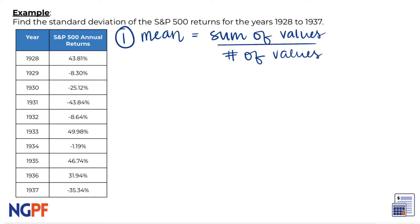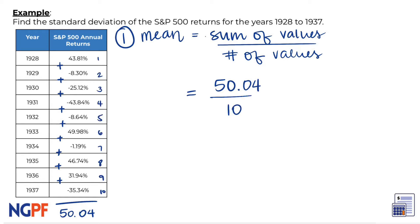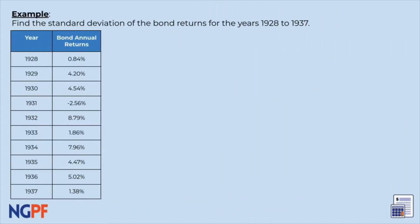We can find the average return of the stock market for these 10 years by adding them up to equal 50.04, and then dividing by 10 for 10 data points, which gives us 5.004. Go ahead and calculate the mean of your data set here. Your practice problem has a data set of the annual returns of bonds for the same 10 years, 1928 to 1937. Pause the video here and calculate the mean of this data.